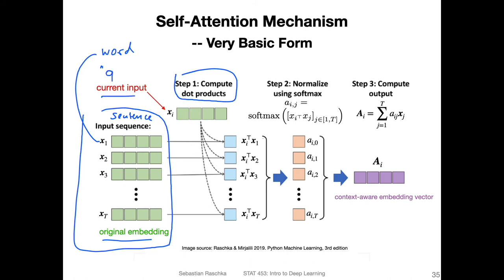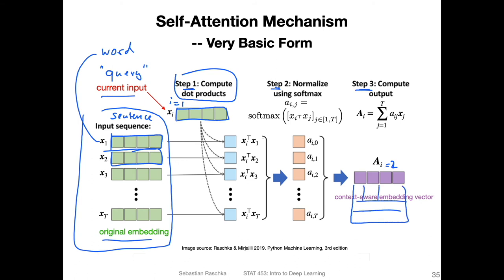We would start with the first word, walk through step one, step two, step three, then move on to the second word and do the same thing. The output is a_i for i=1 for the first step, a_i=2 for the second, and then we stack them all up to get essentially a matrix. We use the dot product to compute similarity — that's just one way to compute compatibility between two vectors. We could also use cosine similarity, which is essentially a normalized dot product.